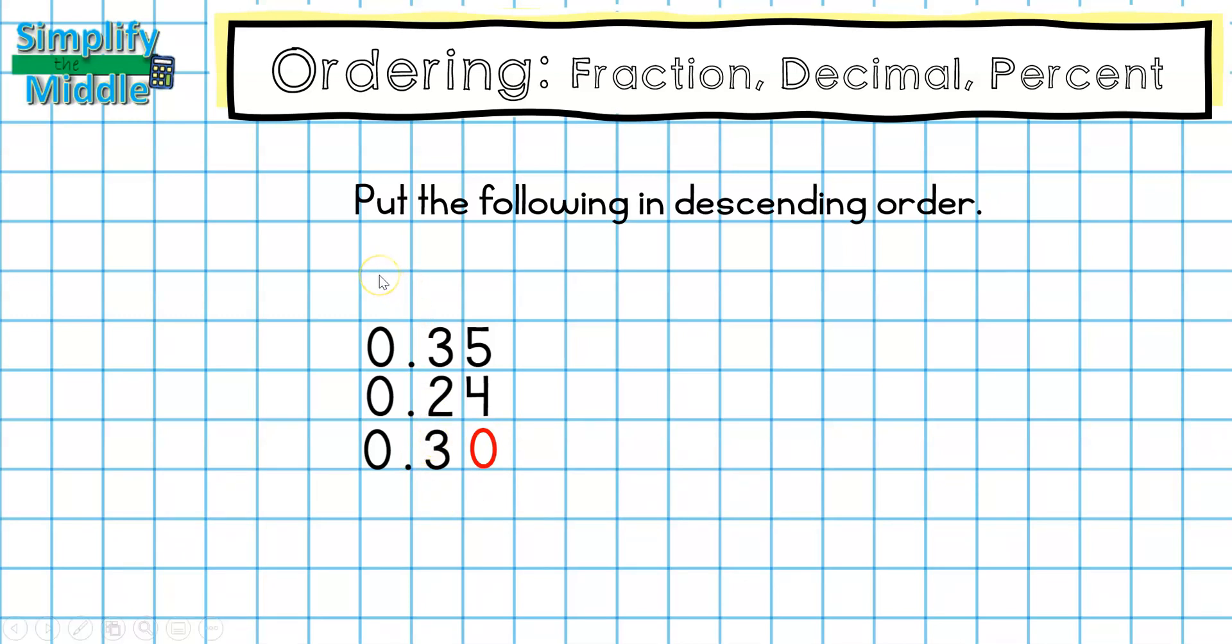Now I'm going to compare my numbers looking at the left and going towards the right. In the ones column, they're all zero. In the tenths column, I can see that there are two numbers that are bigger than the other. So this one is not going to be our largest number. In order to find out which is bigger, 35 hundredths or 3 tenths, I need to go to the hundredths place value. Here I have five and here I have zero.